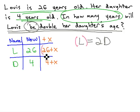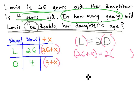26 plus x equals 2D. We'll replace that with the cell that represents the daughter in the future, 4 plus x.